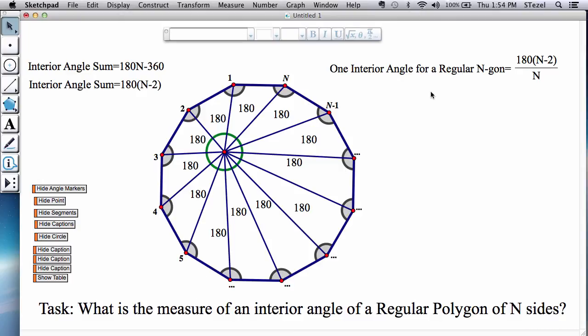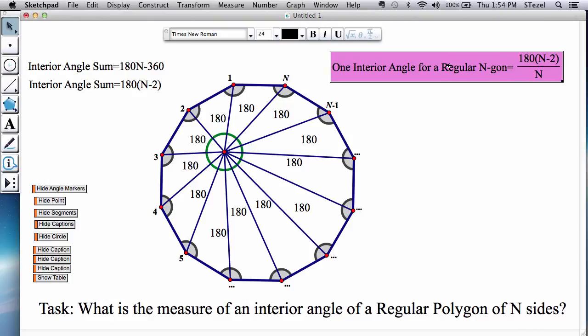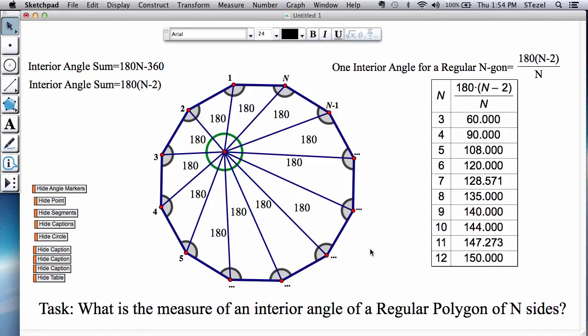So here is a formula for one interior angle of a regular n-gon and you could actually tabulate this and this is a very useful table to know by heart.